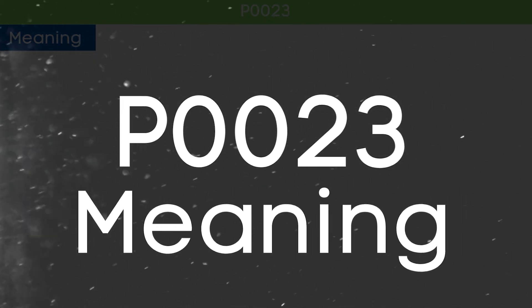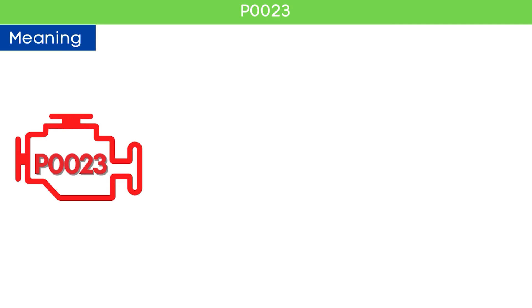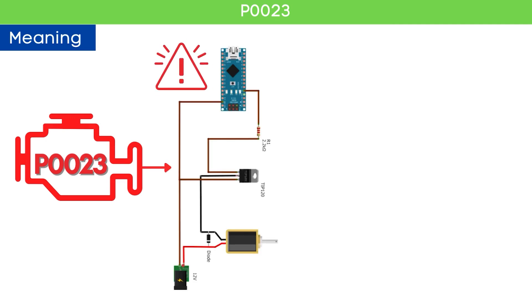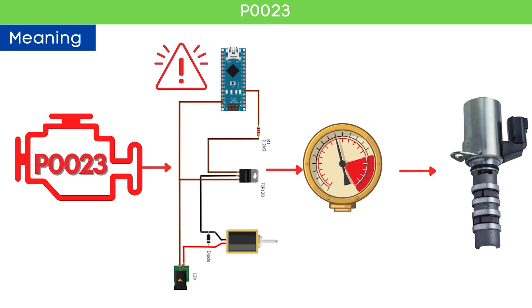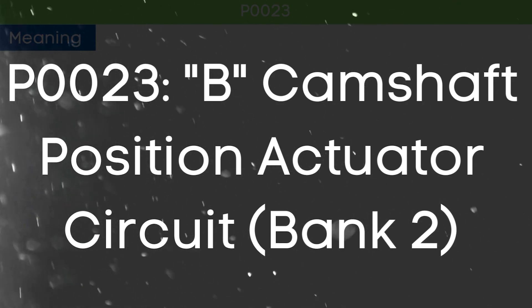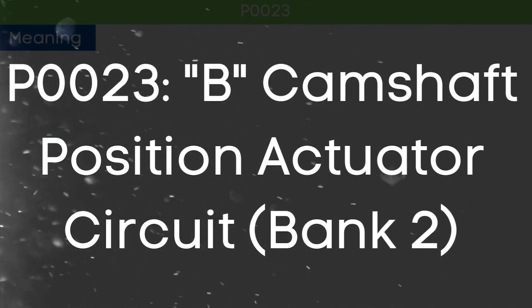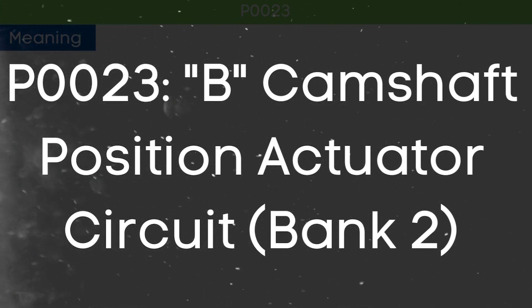The P0023 code means that the ECM has detected a circuit issue with the solenoid actuator that directs oil pressure to the engine's variable valve timing system. It indicates an issue with the camshaft position actuator circuit for bank two, specifically referring to the exhaust camshaft.